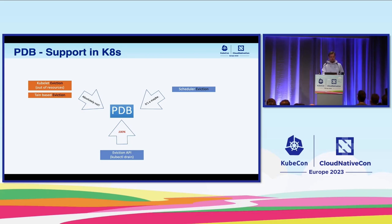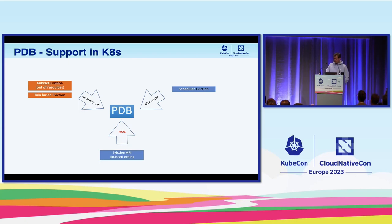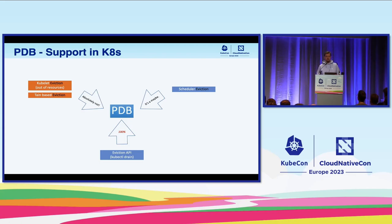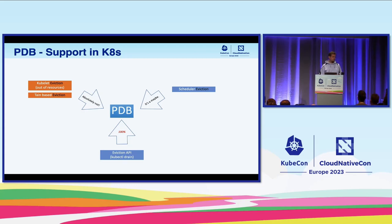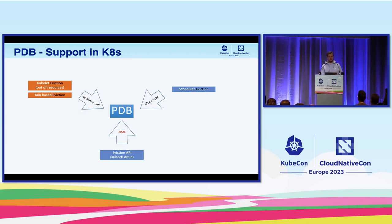The scheduler, similar to kubelet and taint manager, also doesn't use the eviction API and does pod deletion. However, the scheduler does consult PDBs before removing pods. The eviction API is the full beneficiary of PDBs — it will reject pod removal if policies would be breached. If disruptionsAllowed drops to zero, it returns error 429, prompting the caller to attempt to evict pods later. You cannot evict pods through kubectl, but you can call the eviction API directly through the Kubernetes API.